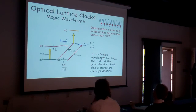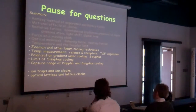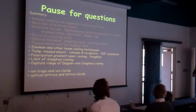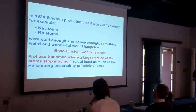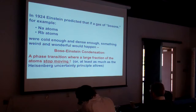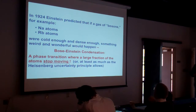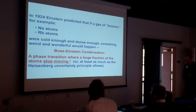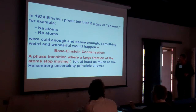Now let's move on to Bose-Einstein condensation, where all the action is these days. In 1924 — which is absolutely remarkable — after Einstein heard about Bose's new way of counting, he did a statistical mechanical calculation showing that if you had a gas of bosons — and it turns out most atoms are bosons — and it was cold enough and dense enough, you would get the wonderful phenomenon called Bose-Einstein condensation.